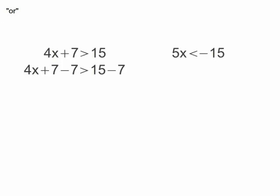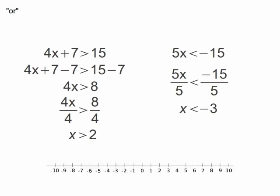Compound inequalities that involve the word OR will produce two sets of answers that either overlap or don't include the other at all. Each set will start at a specific number and then continue on as if it were a simple inequality.